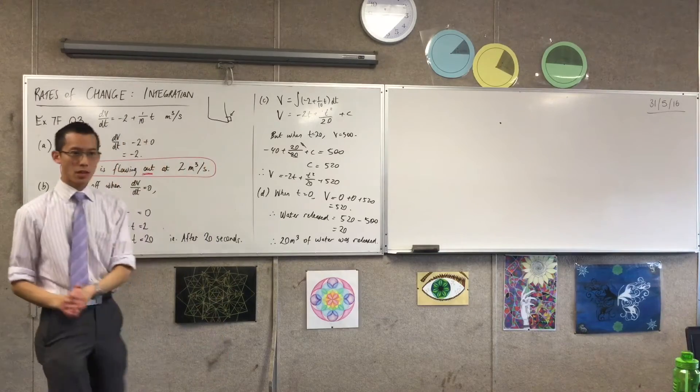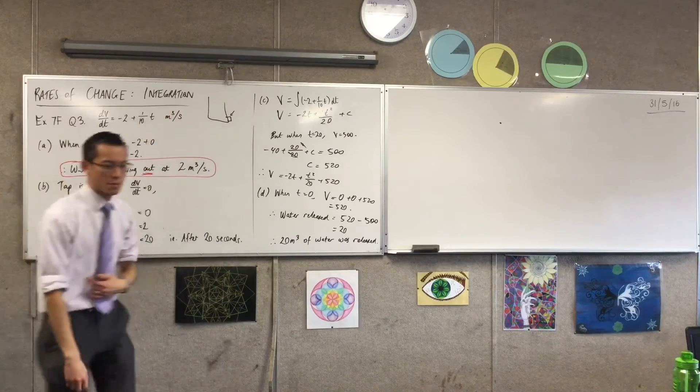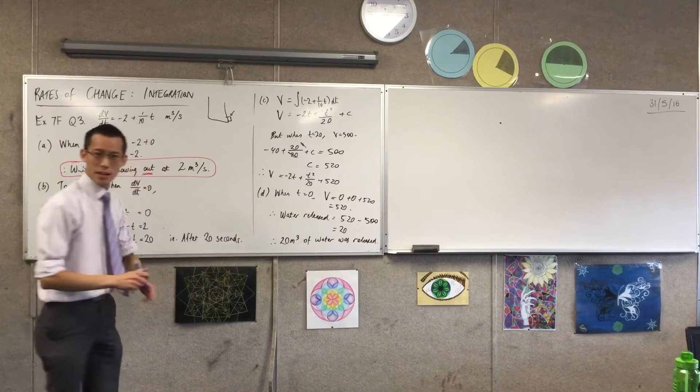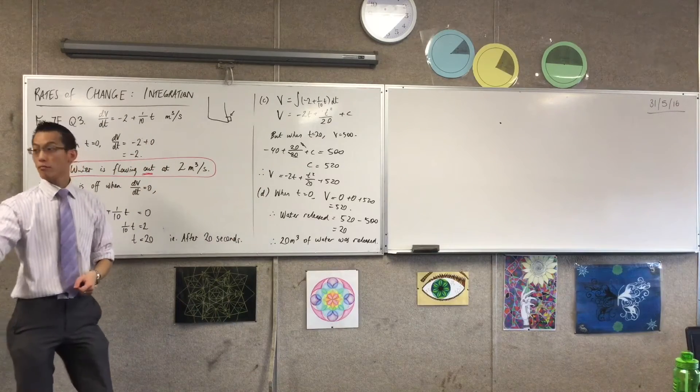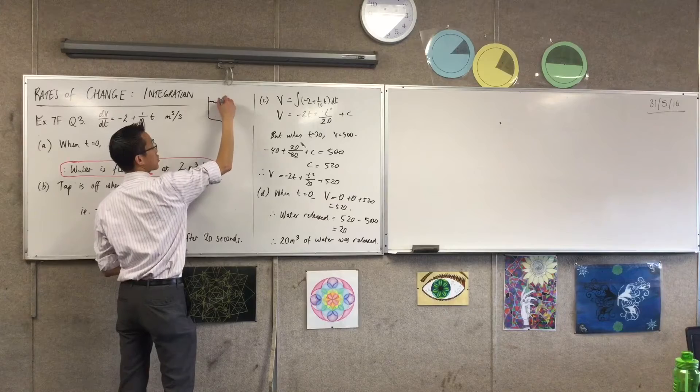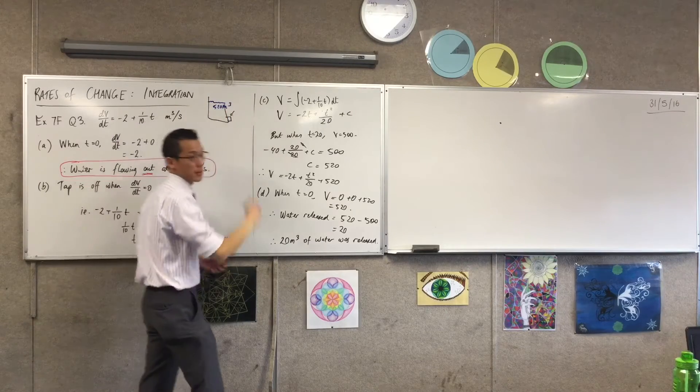So here's the idea, right? Put your pens down for a second. You've got the tank of water, okay? And it starts at, what did we say it started at? 520. Okay, so let's just call that 520 cubic meters.